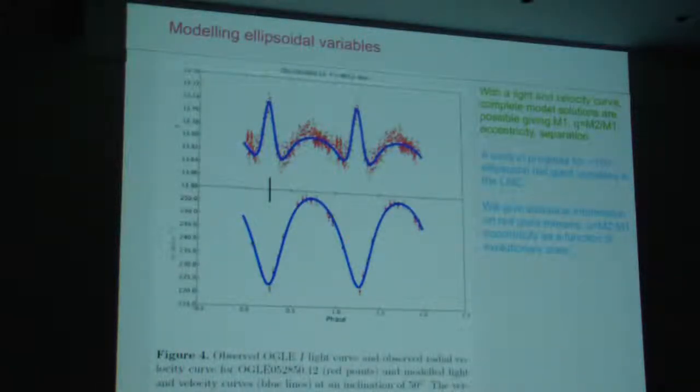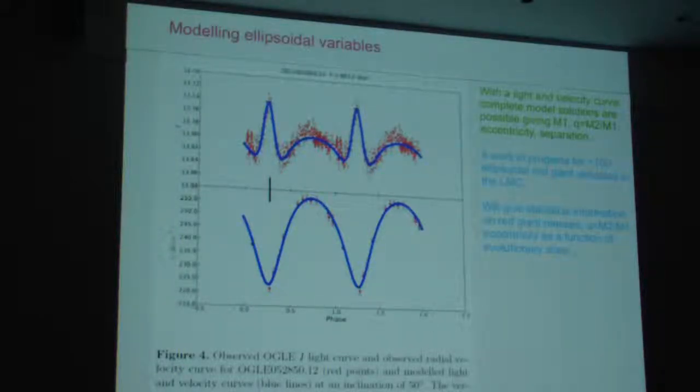Now, the important thing about these, or one of the interesting things about these stars, the ellipsoidal variables is that if you get a radial velocity curve, you can actually get the mass, the mass ratio, you can find all the binary parameters for the system. And we're doing that for about 100 of these things. I'll show here results for 67 that we've completed so far. You see there's a peak here around 1.6 solar masses in the mass for the primary, and the mass ratio is something like this.